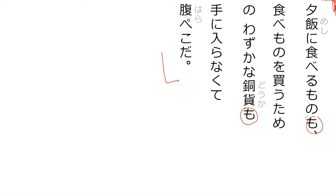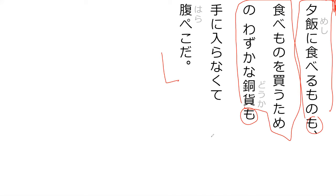Right here we have two things attached to mo. Mo tells us it's also — it expands the topic, meaning it happened to this and it also happened to that. The thing that mo has replaced in these contexts is ga. So both subjects use te ni hairanakute — since both of these are true, we use mo for 'also' rather than ga.